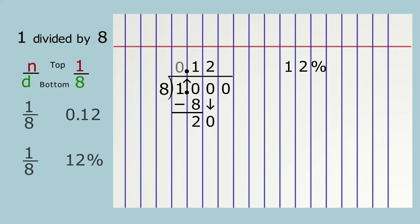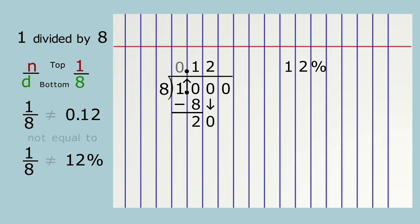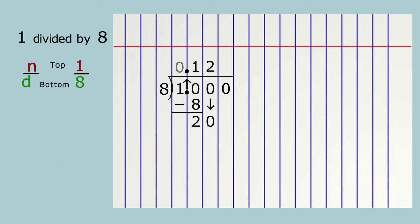What have we learned about one-eighth? One-eighth is less than twelve hundredths or twelve percent, so one-eighth is not equal to twelve hundredths or twelve percent. But one-eighth is approximately twelve hundredths or twelve percent. Sometimes an estimate is all you need, but how can we get the exact answer? Let's continue dividing.